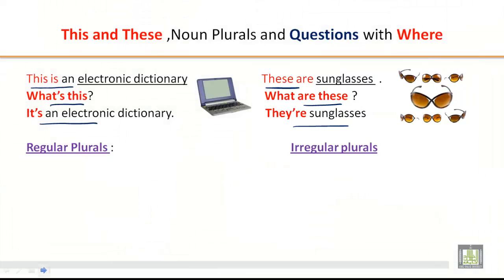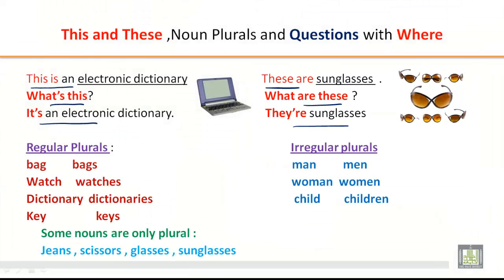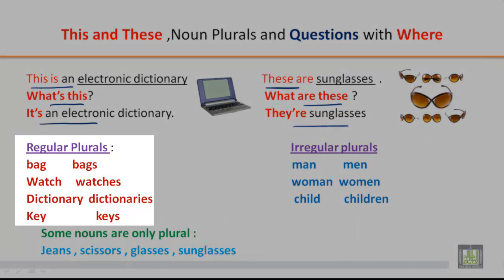Let's do some more examples to understand regular and irregular noun plurals. For regular plurals, we make plurals by just adding S. For example: bag becomes bags. For words ending in certain sounds like 'watch', we add ES — watches. Key becomes keys.